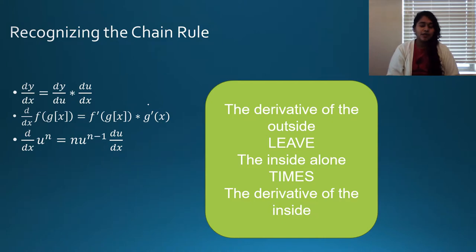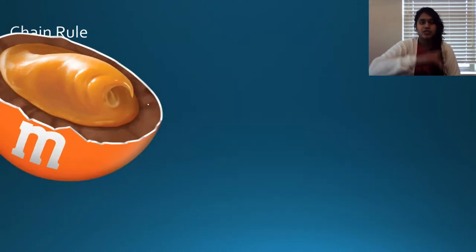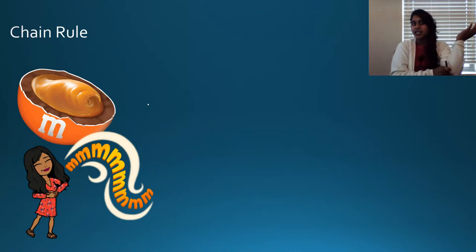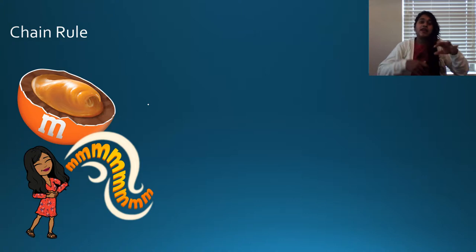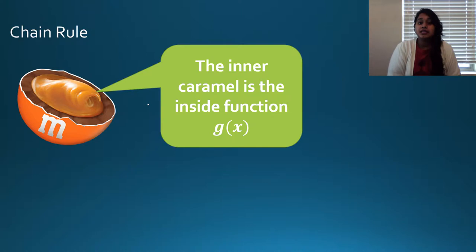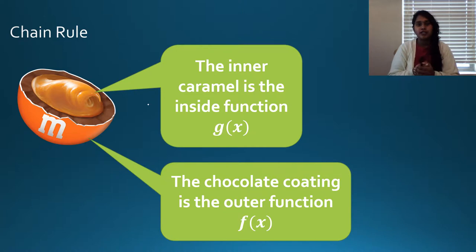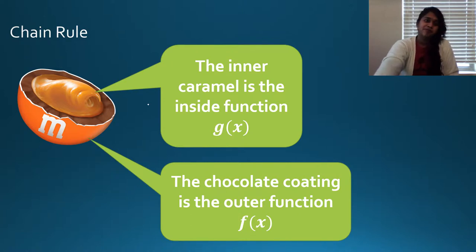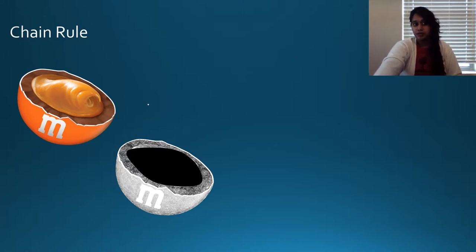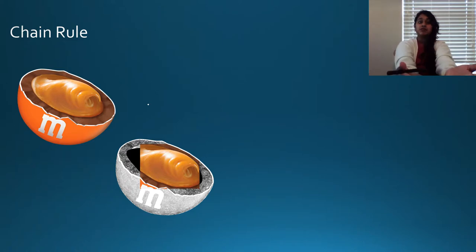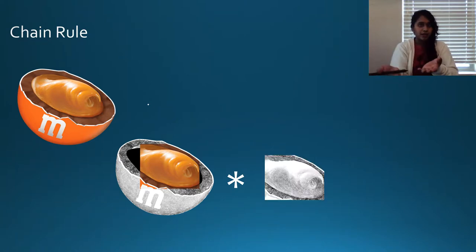If this is still confusing, here's a visual representation — and I hope you've eaten, because this might make you hungry. Think about caramel M&Ms: they have an outside and an inside. The inside caramel is my G of X. The outside chocolate coating is my F of X. If I take the derivative of this caramel M&M: the outside is shown in grayscale, the inside is left brightly colored — unchanged — then times the derivative of the inside, grayscale again.